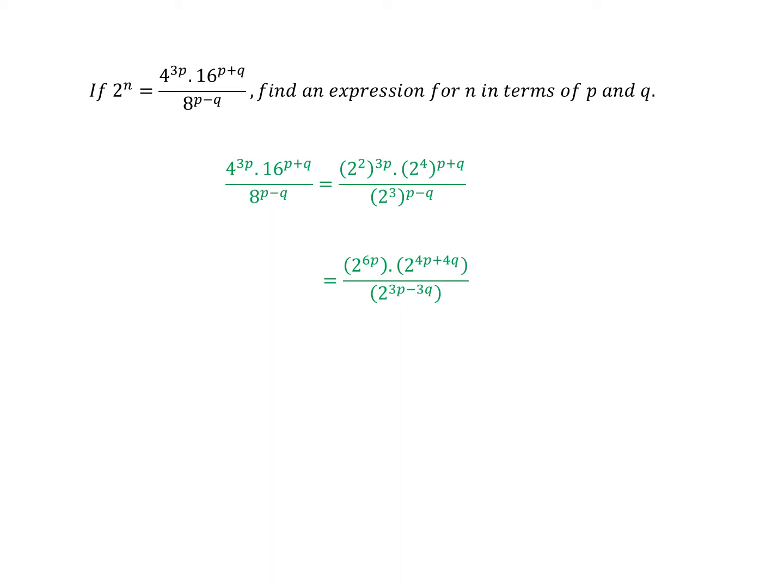Then when I multiply the two numbers on the numerator together, I simply add the indices. And then when I'm dividing by 2 to the power 3P minus 3Q, that's the same as multiplying by 2 to the power minus 3P minus 3Q. So I've got this rather nasty-looking power here, but thankfully it simplifies down quite nicely to 2 to the power 7P plus 7Q.